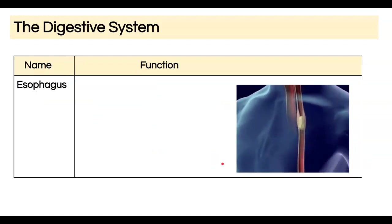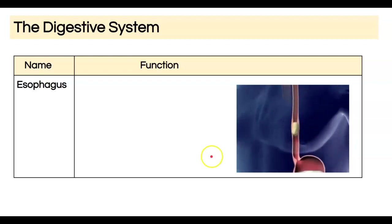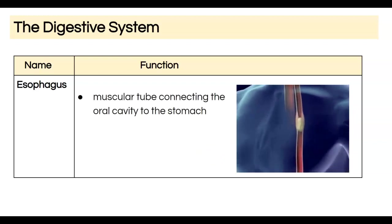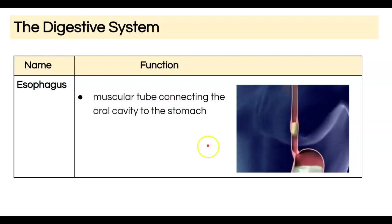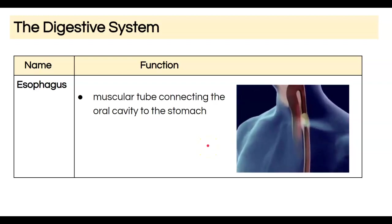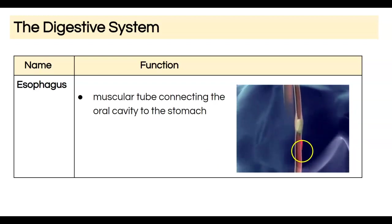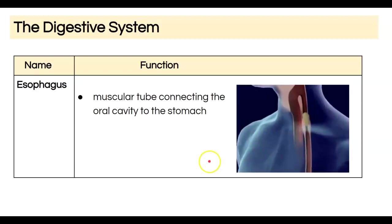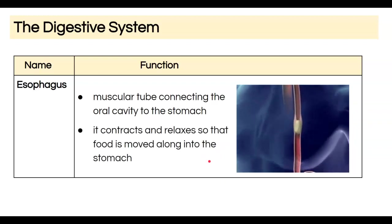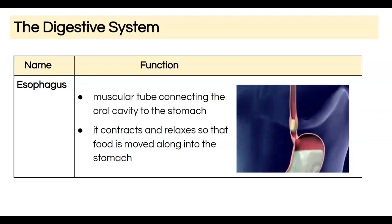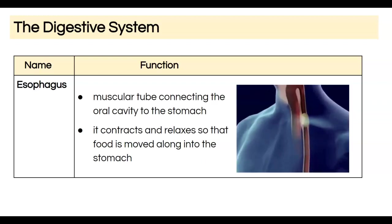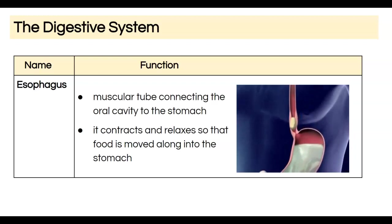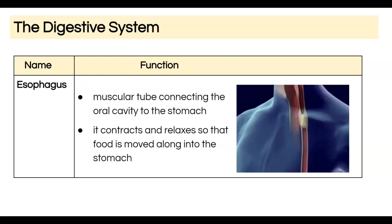The esophagus is a tube that connects the oral cavity to the stomach. Food doesn't move down just because of gravity — there are muscles that contract and push food down through peristalsis. So even if you were standing on your head and swallowed something, food would still make its way from your mouth to your stomach through the esophagus.